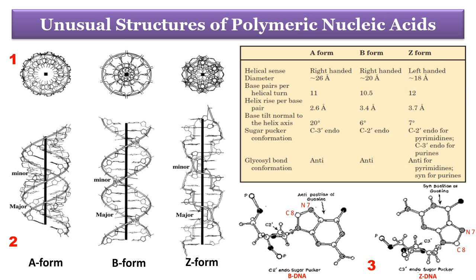In Z-form, there are 12 base pairs per helical turn, and the structure appears more slender and elongated, with the DNA backbone taking on a zigzag appearance. The major groove is barely apparent in Z-DNA, and the minor groove is narrow and deep. Certain nucleotide sequences fold into left-handed Z helices more readily than others — prominent examples are sequences in which pyrimidine bases alternate with purine bases, especially alternating cytosine and guanine or 5-methylcytosine and guanine residues. To form the left-handed helix in Z-DNA, purine residues flip to the syn conformation, alternating with pyrimidines in the anti-conformation.